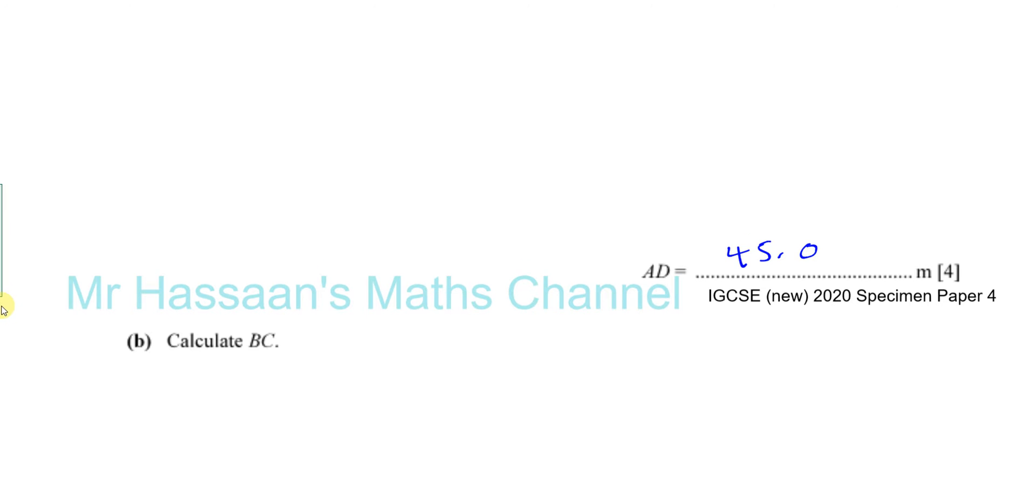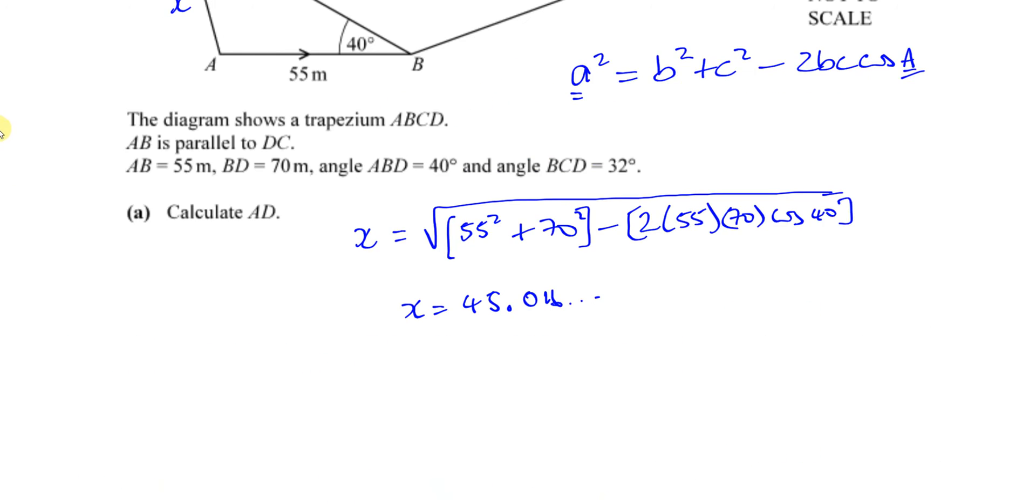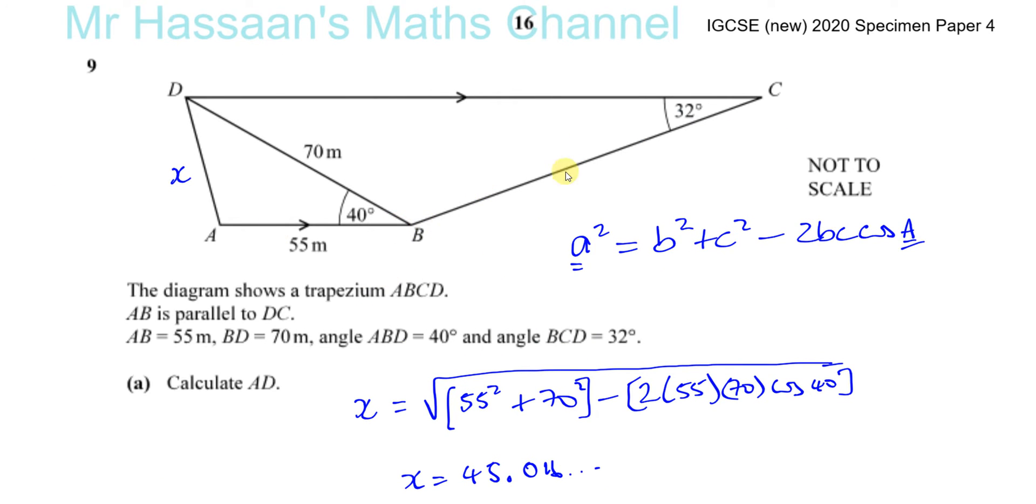Part B says calculate BC. Now BC is basically this length over here. Let me call it Y. This is BC. So we want to find what this length BC is. We know that these two are parallel. So I know that this is 40.